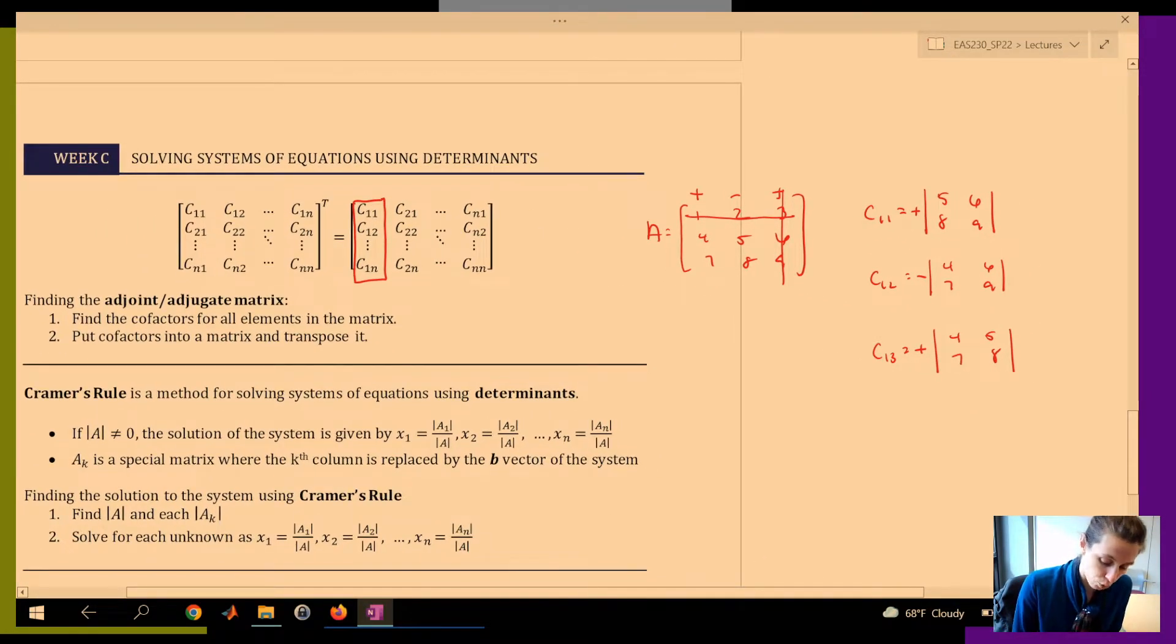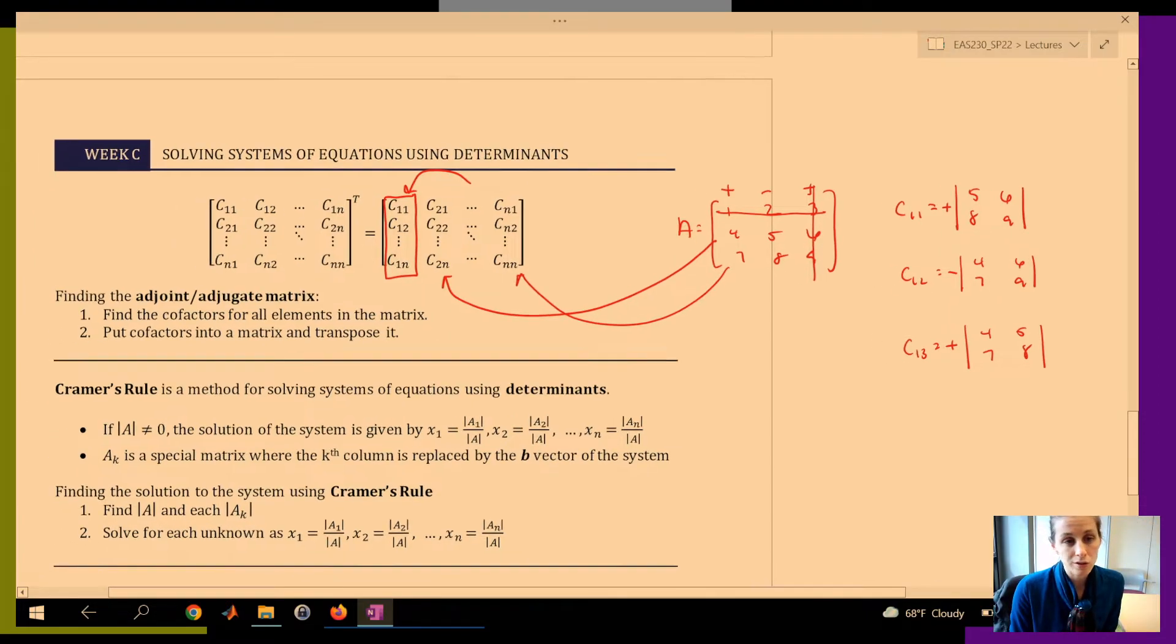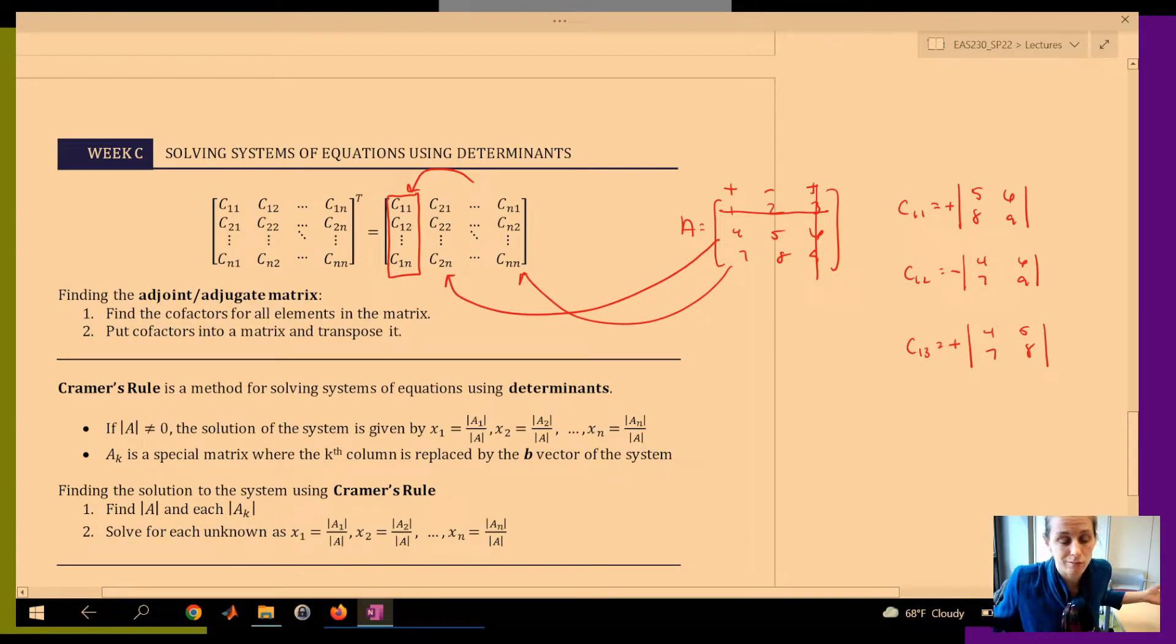And then I would repeat for row 2, repeat for row 3, find all of my cofactors. So all the cofactors for my first row go into my first column, cofactors for my second row go into my second column, third row, third column. Once I find all those cofactors, that's your adjoint matrix. And then you're done.